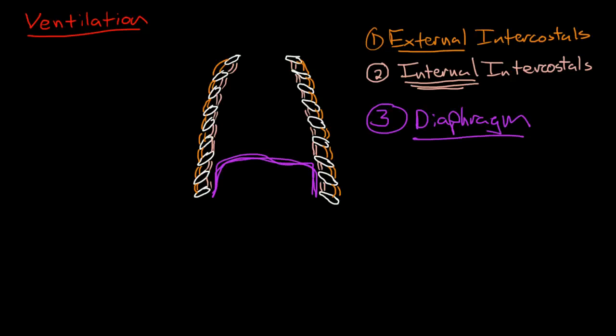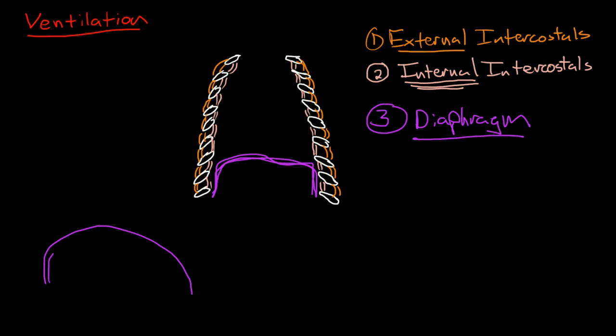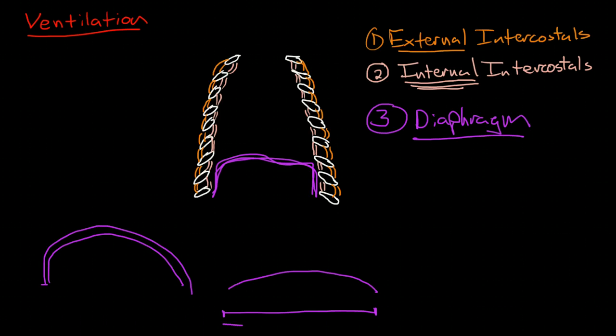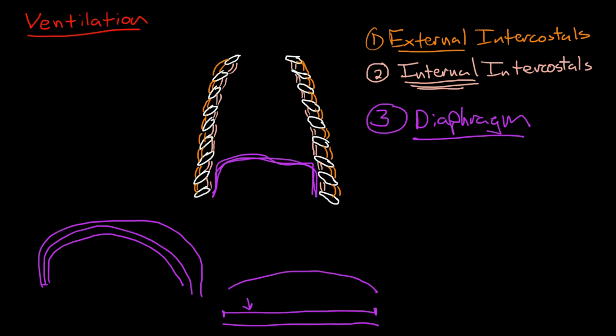Now the diaphragm, interestingly enough, because it's dome shaped it is longer in its dome shape, and when it flattens out it is actually shorter. Those of you who have an engineering or math background could probably show me formulas to prove this. But the basics is that the shortest distance between two points is a straight line. So the closer we get to a straight line, the shorter the distance is. When we start out with a very deep or steep curve like this, the muscle fibers of this curved muscle are going to be very long. As we straighten out and approach this straight line, the muscle fibers are going to be shorter and shorter.